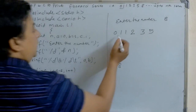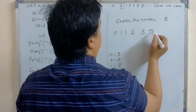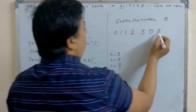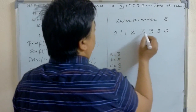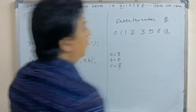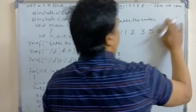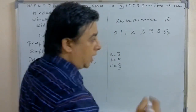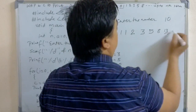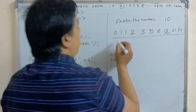After the loop completes, we get the sequence: 0, 1, 1, 2, 3, 5, 8, 13 — up to 8 numbers. If you enter 8 numbers, you will get up to 13. If you enter 10 numbers, it will also print 21 and 34.